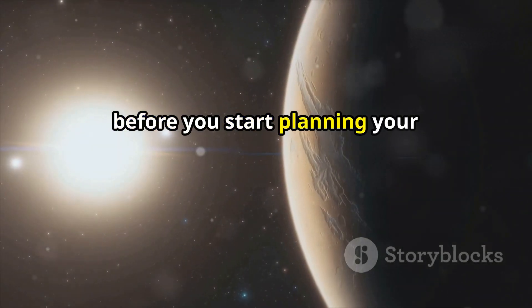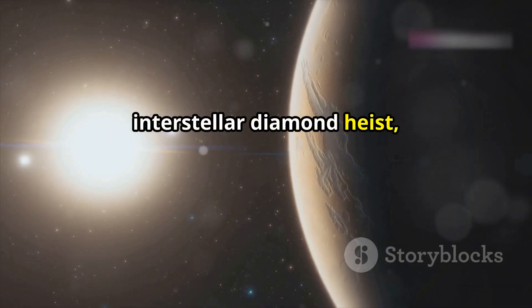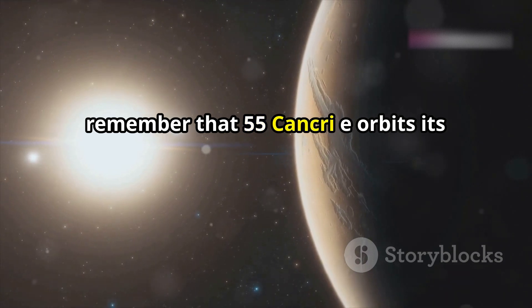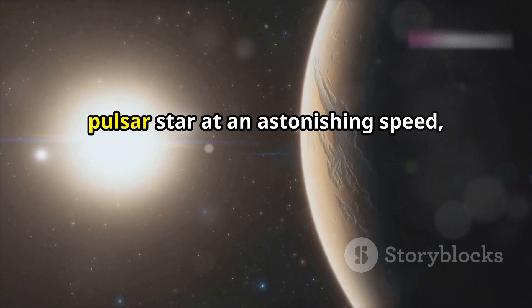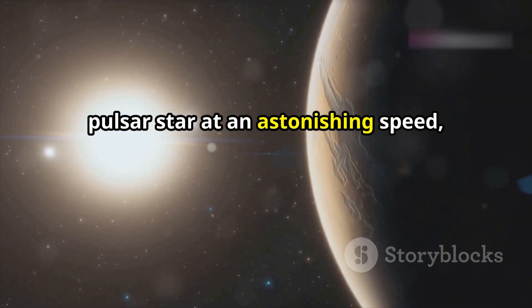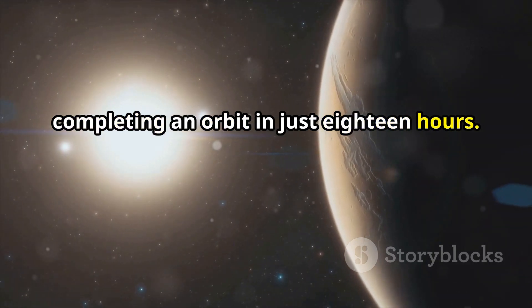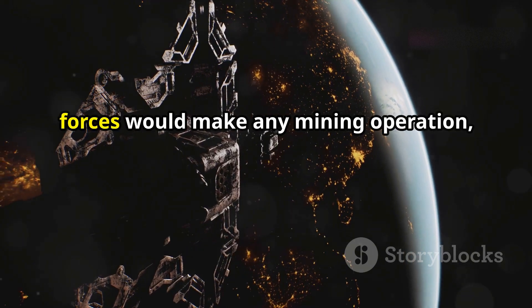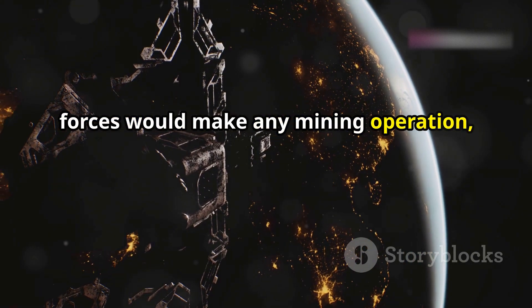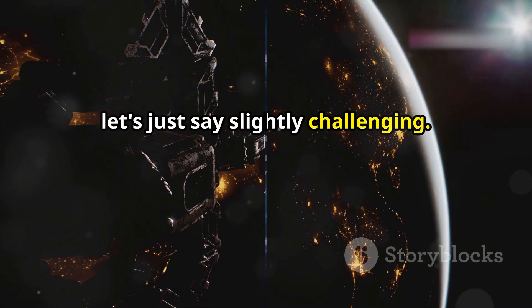However, before you start planning your interstellar diamond heist, remember that 55 Cancri E orbits its pulsar star at an astonishing speed, completing an orbit in just 18 hours. The intense radiation and gravitational forces would make any mining operation, well, let's just say slightly challenging.